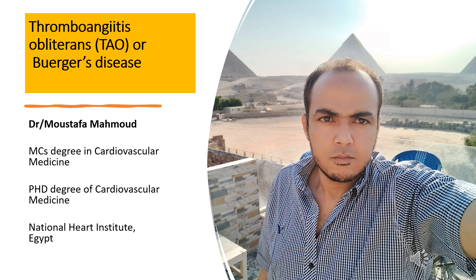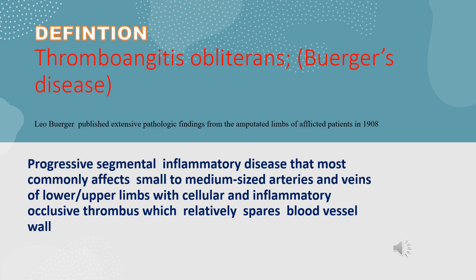Thromboangiitis Obliterans, or Buerger's Disease, by Dr. Mustafa Mahmoud, National Heart Institute, Egypt. Welcome, my dear colleagues, to my channel. Today, we will discuss one type of vasculitis disease affecting small and medium-sized vessels, which is thromboangiitis obliterans or Buerger's Disease. The disease was attributed to Mr. Leo Buerger, who published extensive pathologic findings from amputated limbs of affected patients in 1908.